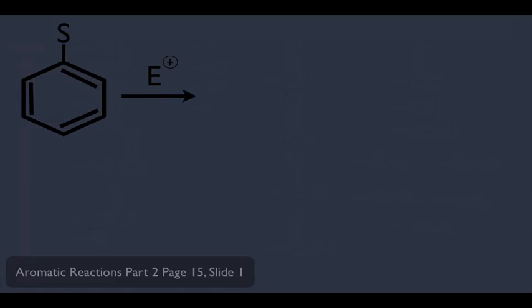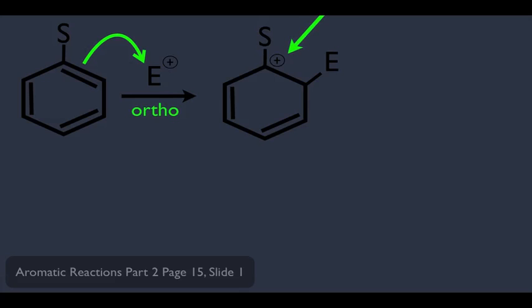that if you add an electrophile, let's say ortho, to an original substituent here, remember the positive charge will end up on the carbon bearing the original substituent.